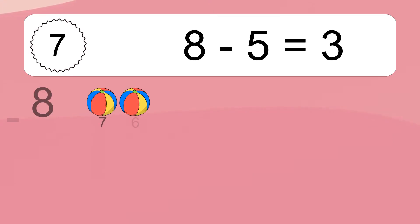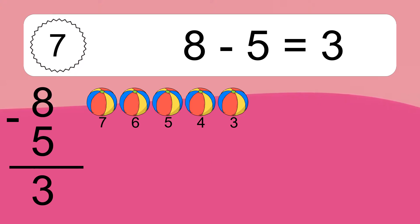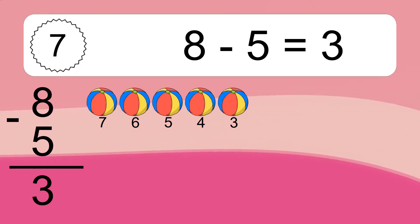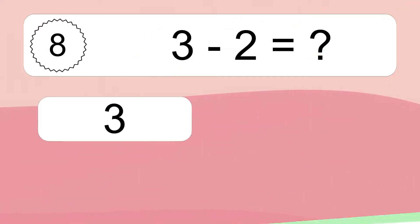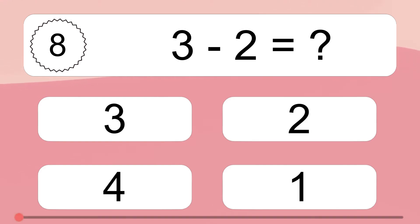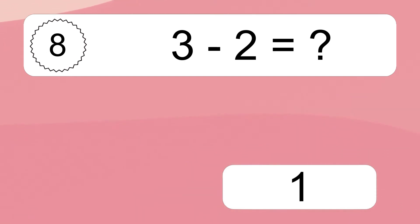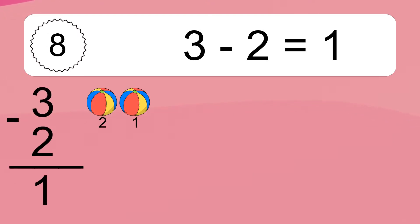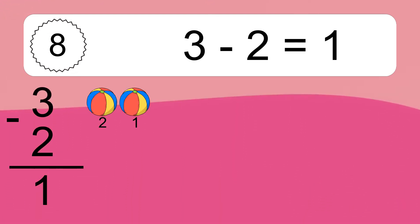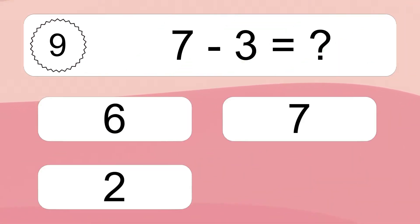8 minus 5 equals 3. Let's count it: 7, 6, 5, 4, 3. 3 minus 2 equals what? 3 minus 2 equals 1. Let's count it: 2, 1.